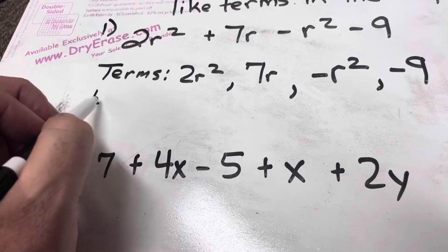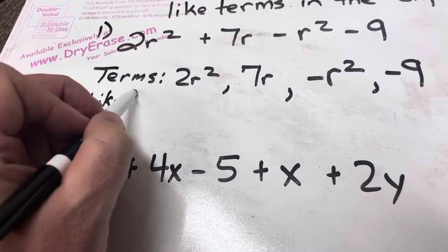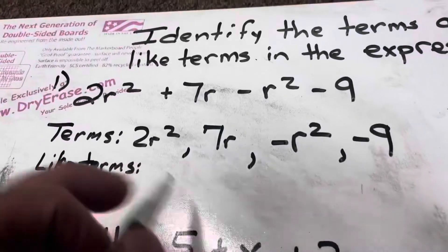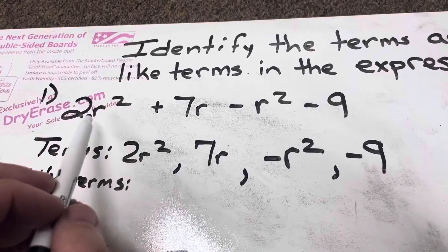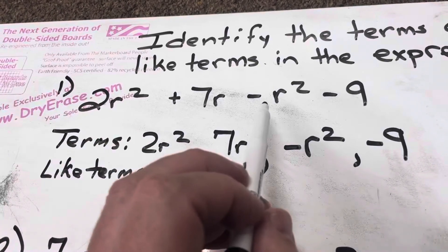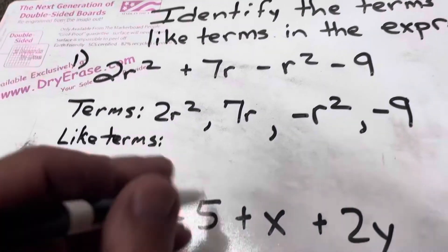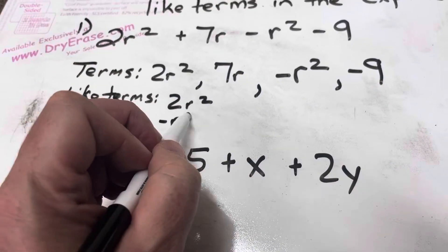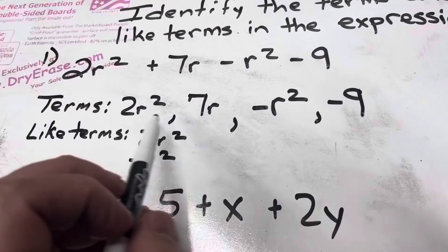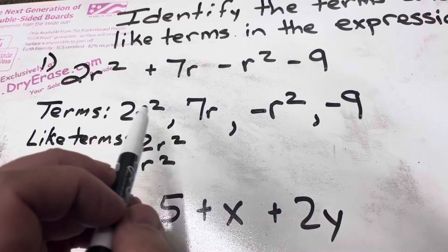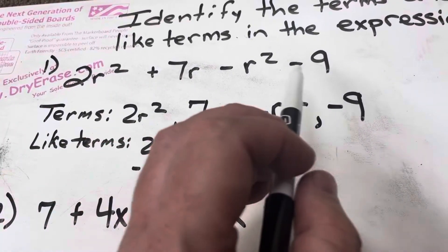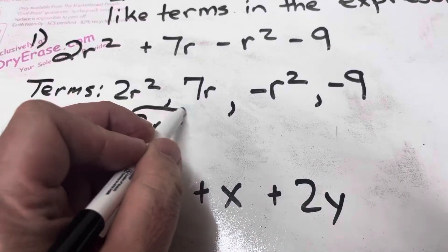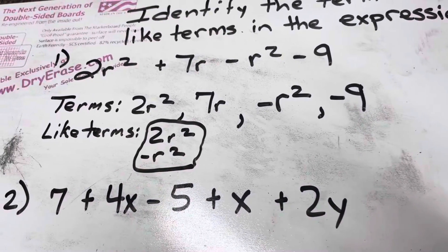So when I talk about listing like terms, I see that both of these have an r squared. I have a positive 2r squared and a negative r squared. So I will say those are like terms. 2r squared, negative r squared. There's nothing else that has a square, so I can circle those to show that they belong in the same group.